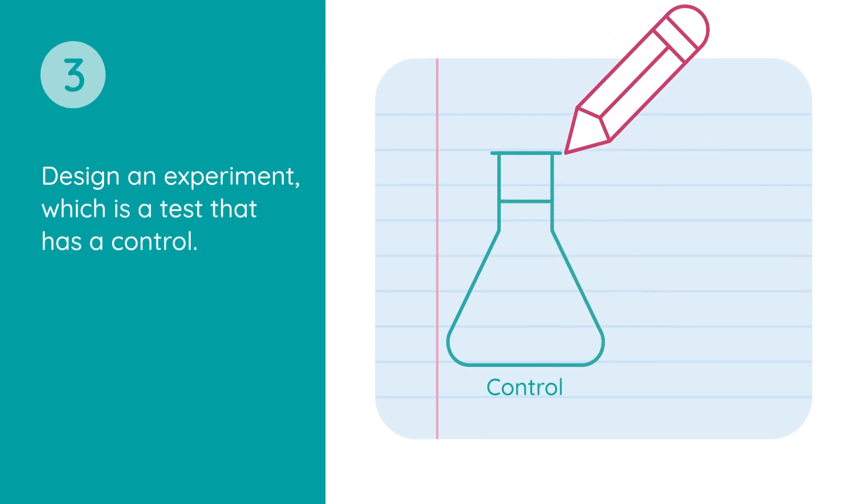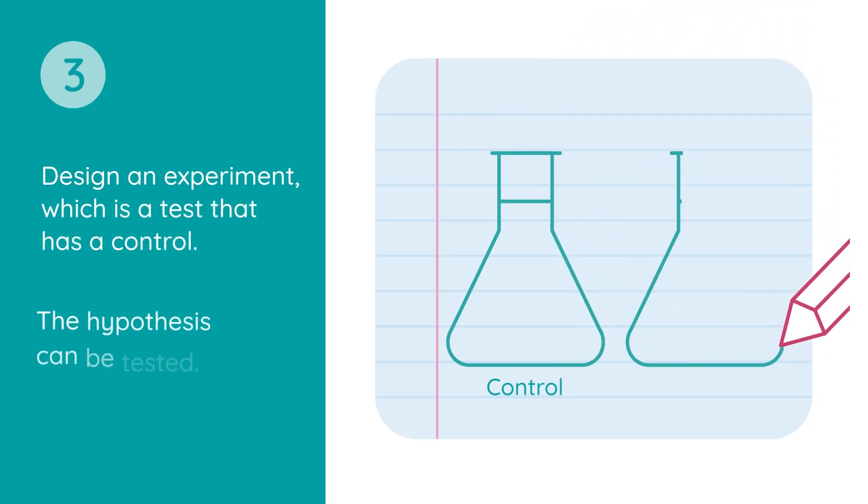The third step is designing an experiment, which is a test that has a control. This is done so the hypothesis can be tested.